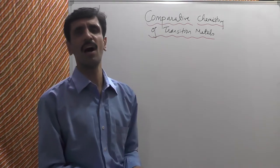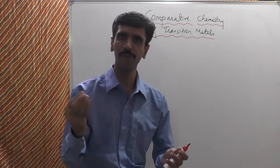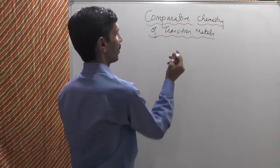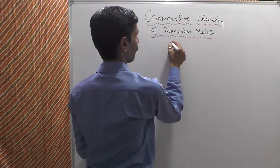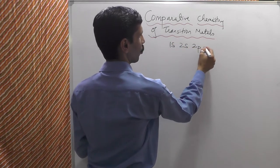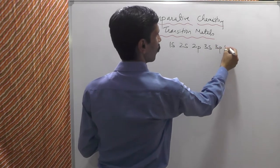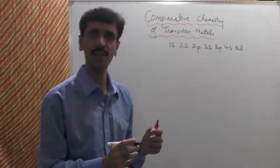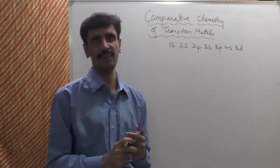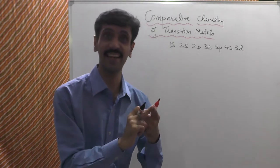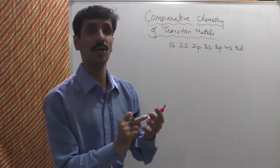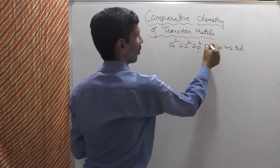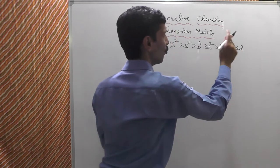Let us go into the basics of the Aufbau principle — the sequence of filling up electrons in orbitals. The sequence is: 1s, 2s, 2p, 3s, 3p, 4s, and then 3d. The maximum capacities are: S = 2, P = 6, D = 10, F = 14. So filling sequentially: 1s², 2s², 2p⁶, 3s², 3p⁶, 4s² — stop here.